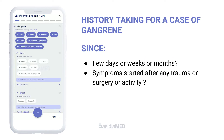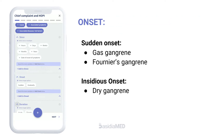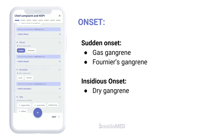History taking for a case of gangrene: since when did the patient have the symptoms? Ask whether the symptoms started after any trauma or surgery. Regarding onset, gas gangrene and Fournier's gangrene usually have a sudden onset, while dry gangrene and peripheral symmetrical gangrene usually have an insidious onset.